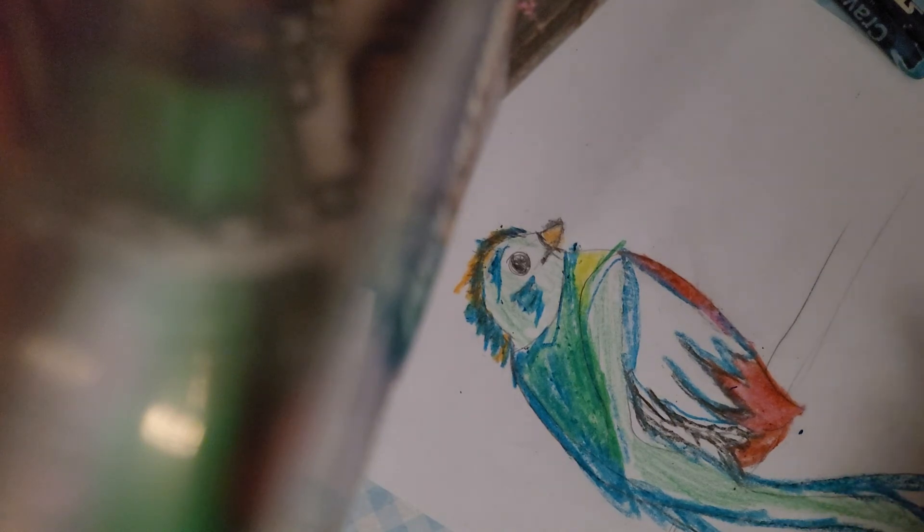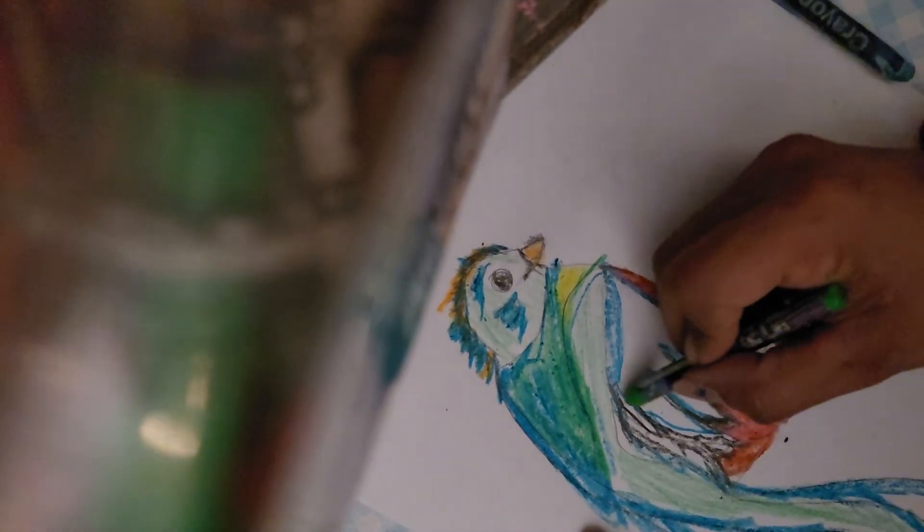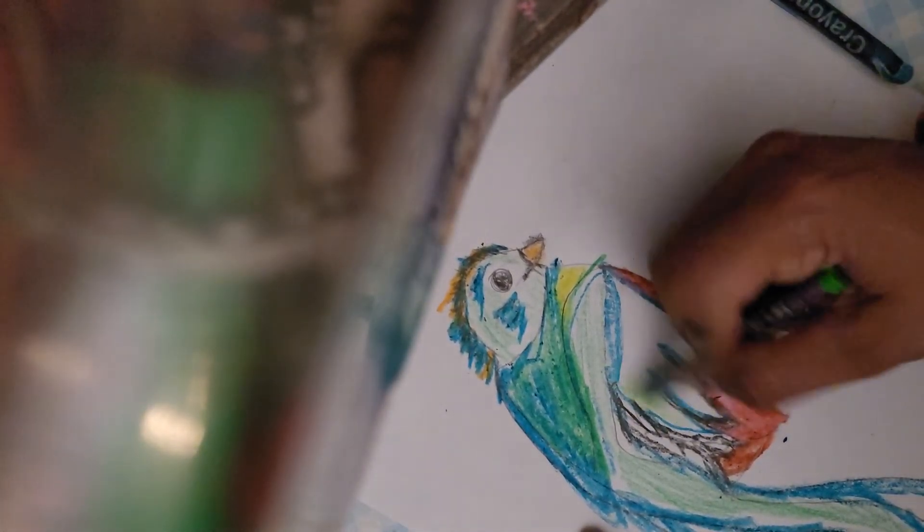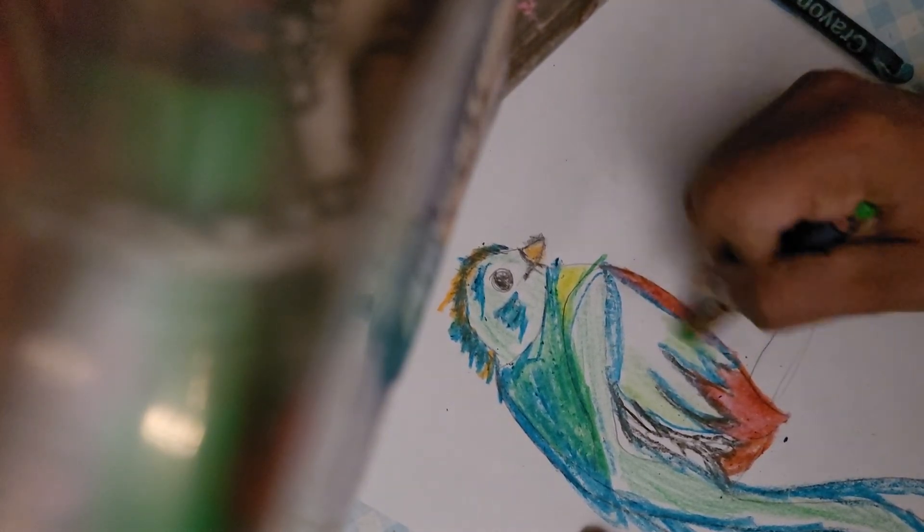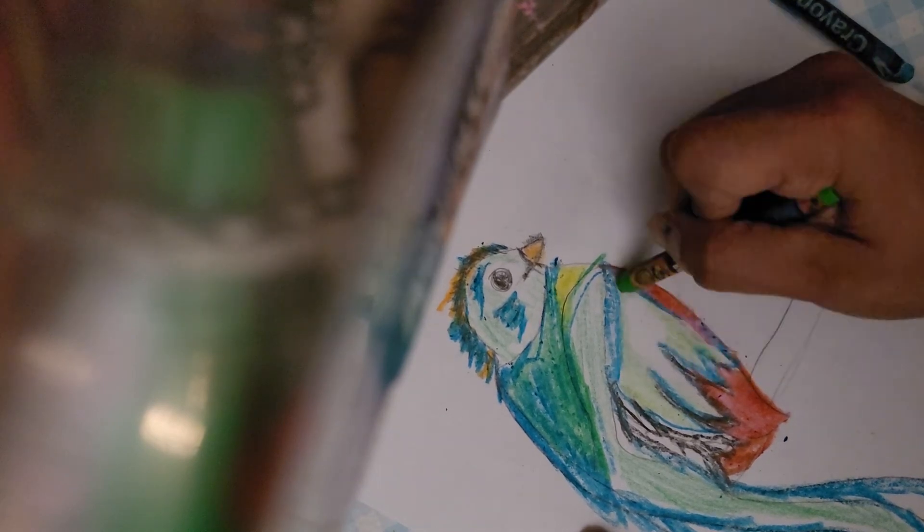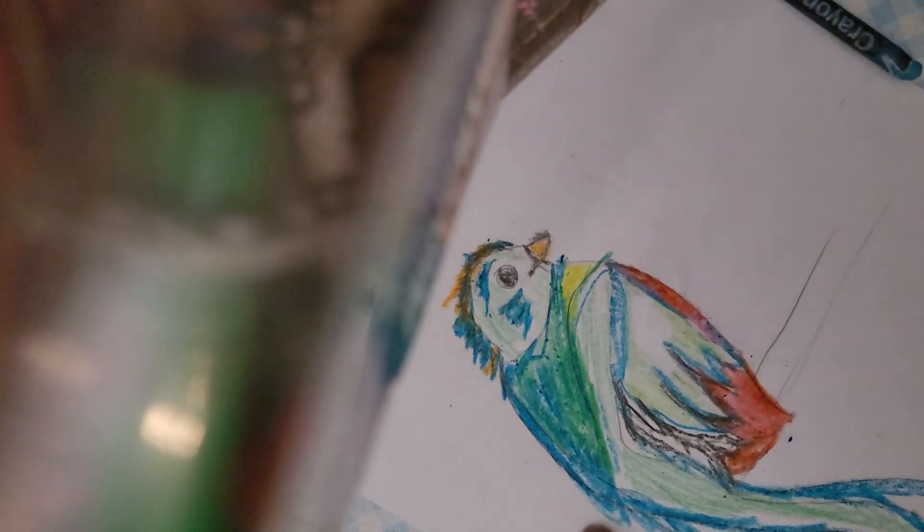And then right here I want to do a lighter green. So if you have a lighter green, go ahead and pull it out. If not, we can make a pattern. So like this, you see how I colored it on the outside, and then...